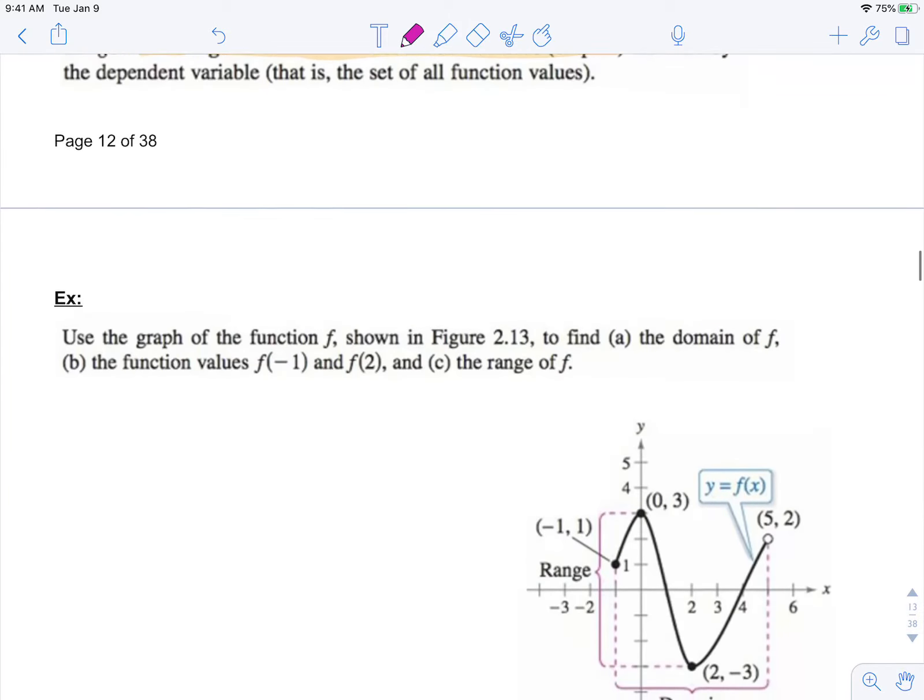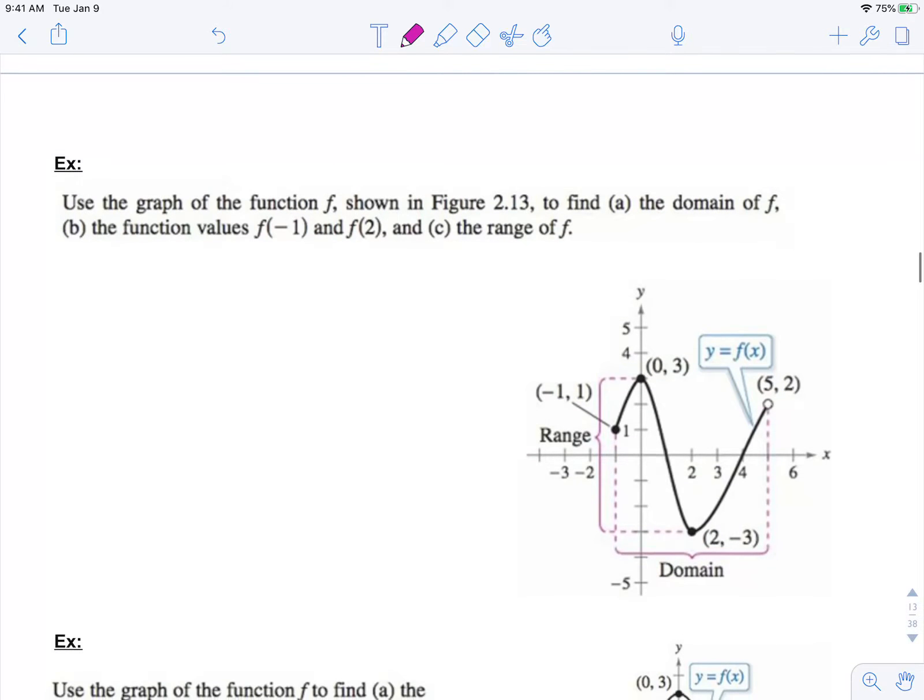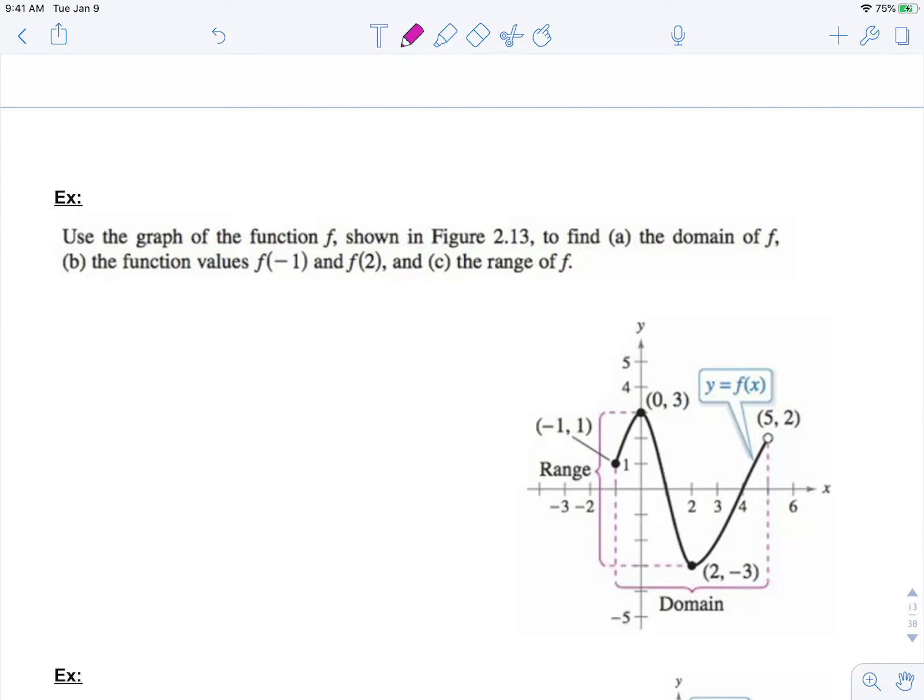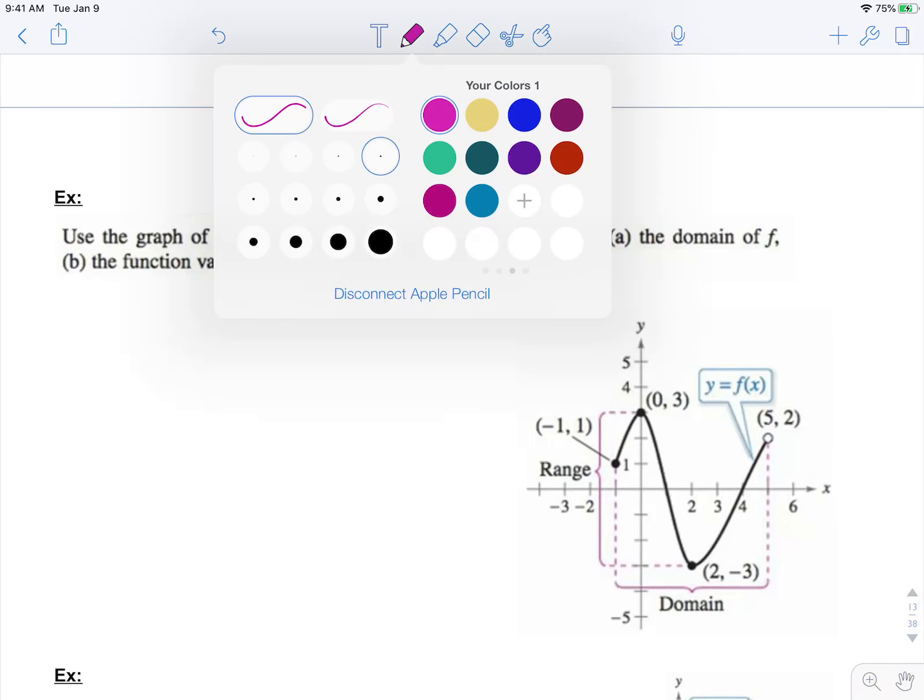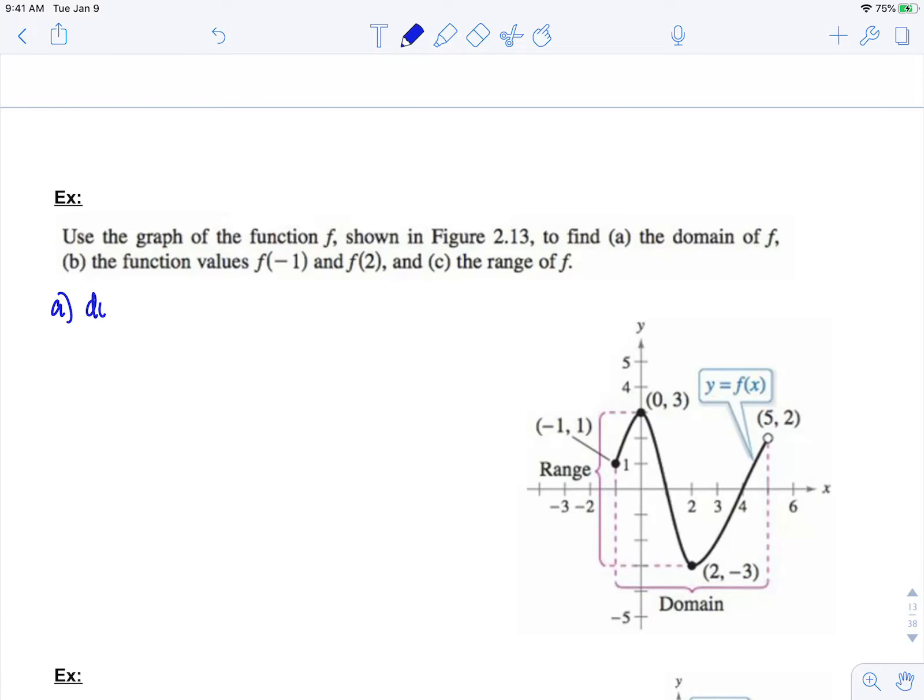We can find the domain of a function given graphically. If we look at this figure below, part a is asking us to find the domain of f. So remember the domain is all possible x values. Now since this is a continuous curve, we have to ask ourselves, what are all of the possible x values of this curve? Well I see that it starts here,